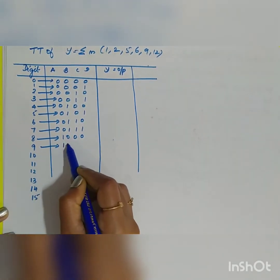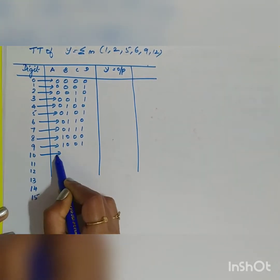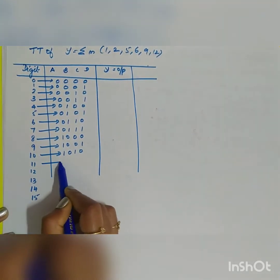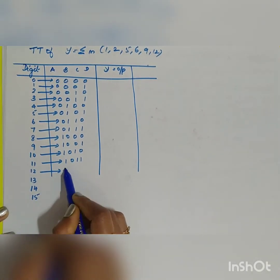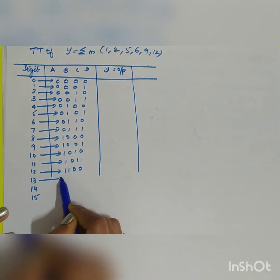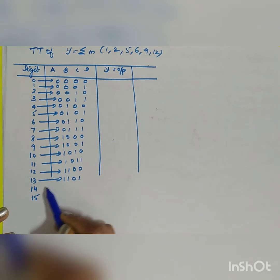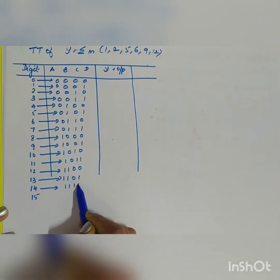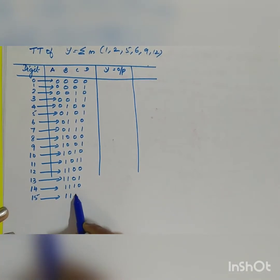The binary representations continue: for 10 it is 1010, for 11 it is 1011, for 12 it is 1100, for 13 it is 1101, for 14 it is 1110, and for 15 it is 1111.